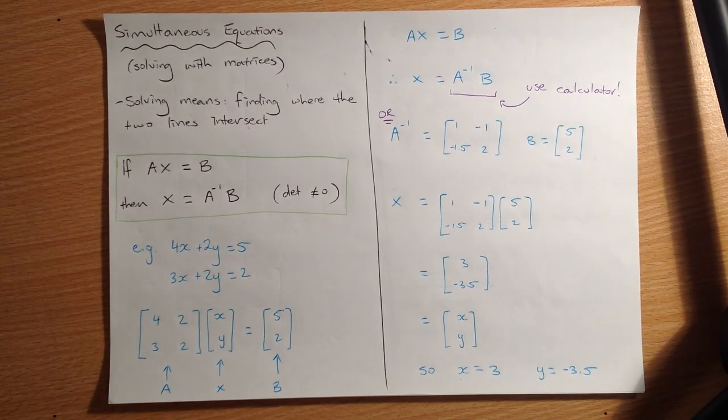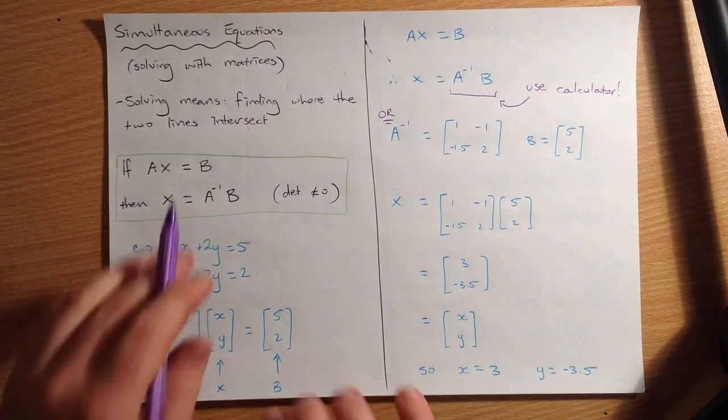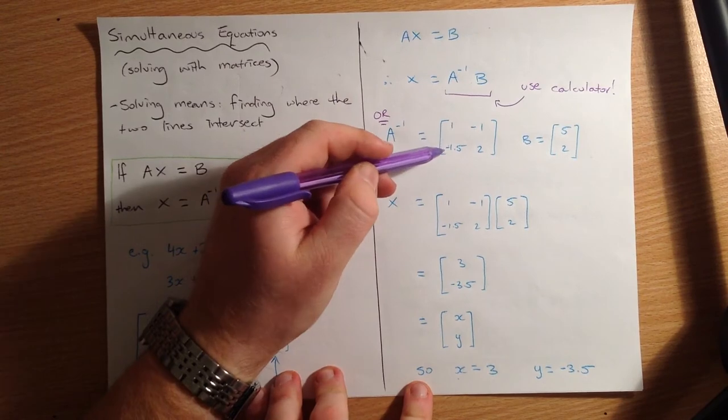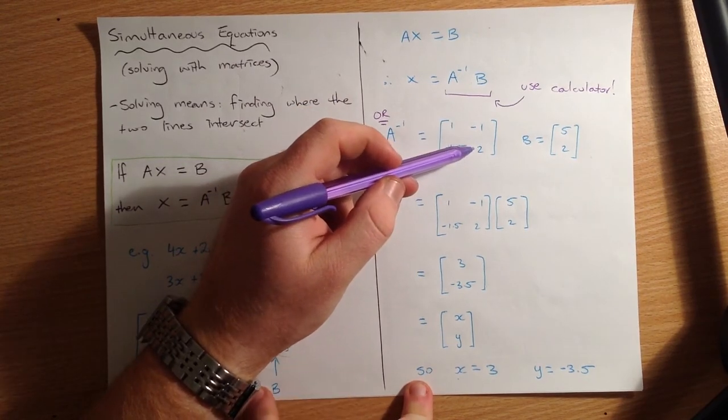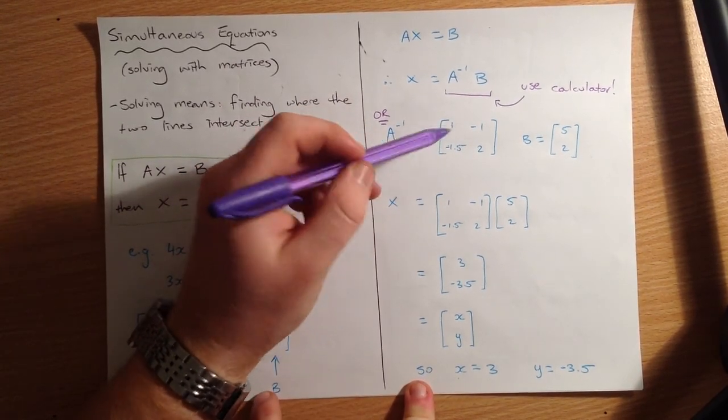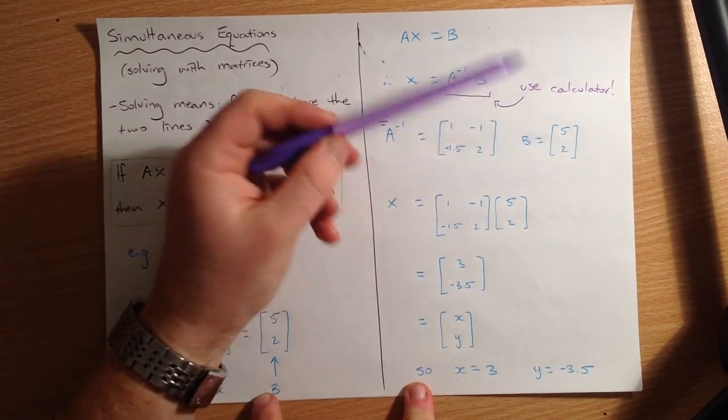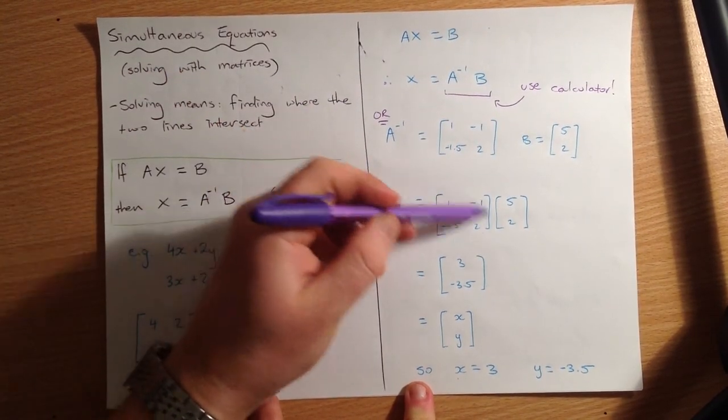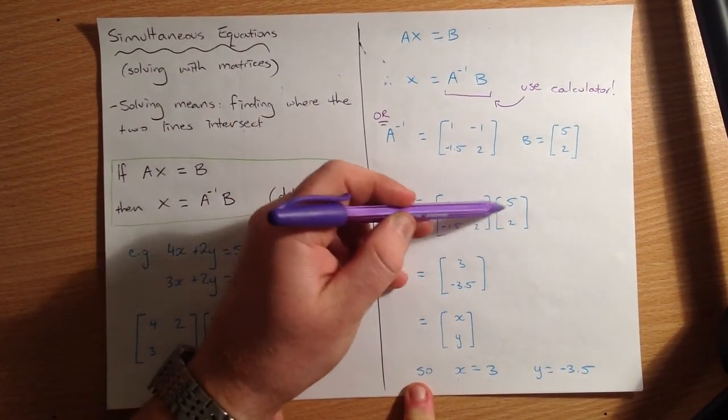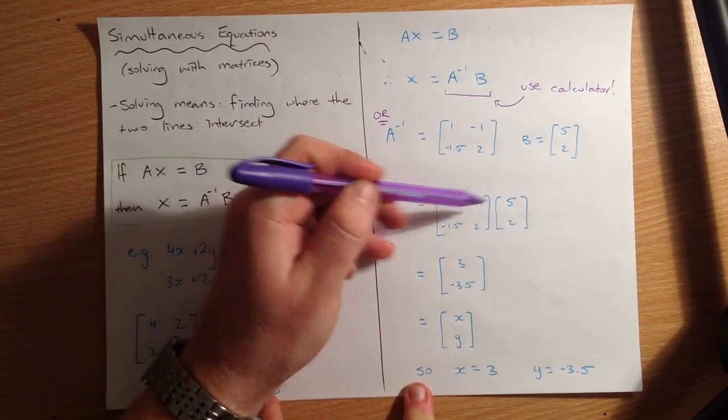But just in case you wanted to do it the long way, and you're really keen, you could say A inverse is 1, negative 1, negative 1.5, 2. And I just did that with my calculator. And then B is 5, 2. So X equals A inverse, that's this bit here, times B. So A inverse B, A inverse B.